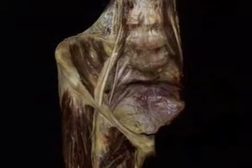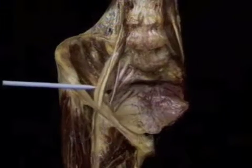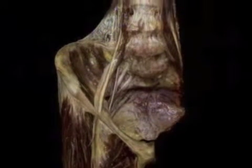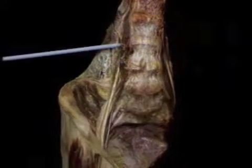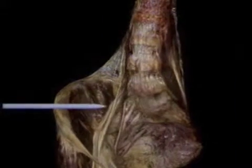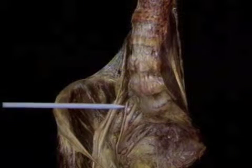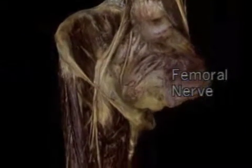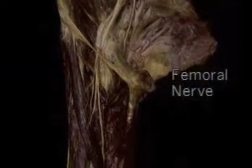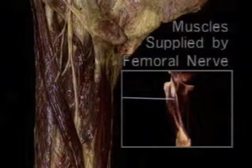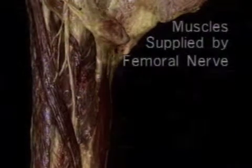We'll start by looking at the femoral nerve and the obturator nerve. This is the femoral nerve; this is the obturator nerve. This white structure in between is the psoas major tendon. Both these nerves arise from the lumbar plexus, which lies up here within the thickness of the psoas major muscle. The femoral nerve emerges lateral to the psoas major, the obturator nerve medial to it. The femoral nerve runs across the iliacus muscle and passes under the inguinal ligament, just lateral to the femoral artery. Below the inguinal ligament, the femoral nerve breaks up into several branches, supplying iliacus, all four heads of quadriceps, and also pectineus and sartorius.